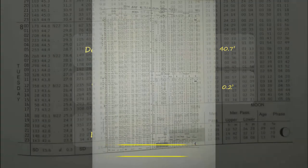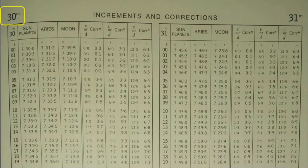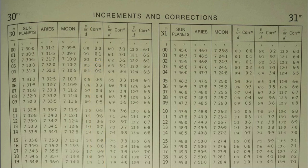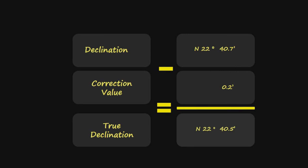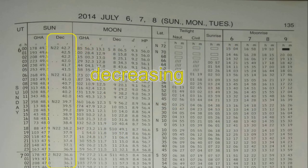On the lower part of the daily page, you can see D with a value of 0.3. On the Increment and Correction table, within the box of 30 minutes, under the D and V correction, find D value 0.3. The corresponding correction value for 0.3 is 0.2. Hence, in our calculation for true declination, we use 0.2 as the correction value. North 22°40.7' minus 0.2 equals North 22 degrees and 40.5 minutes. Please take note: subtraction is used because the declination is in decreasing order. If the declination is increasing, use addition.